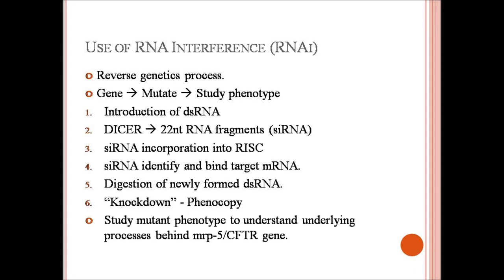In this experiment, the MRP5 gene is mutated so that we can study the phenotype produced. In RNAi, double-stranded RNA is introduced through injection, soaking, or feeding of worms. DICER, an enzyme with helicase activity, cleaves double-stranded RNA into small 22 nucleotide fragments called small-interfering RNA, or siRNA.